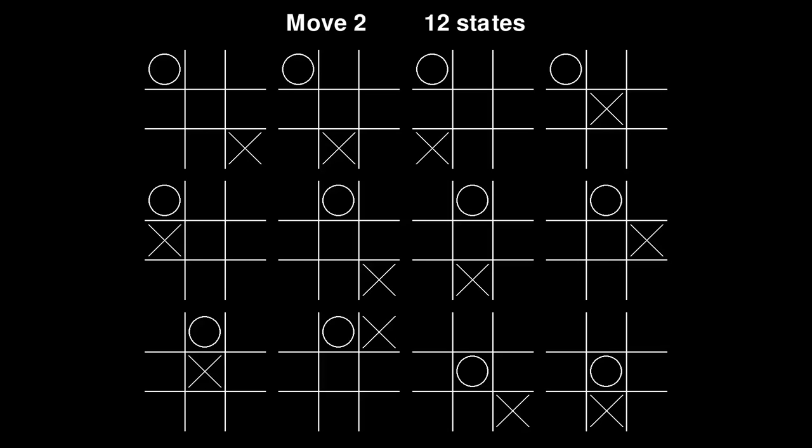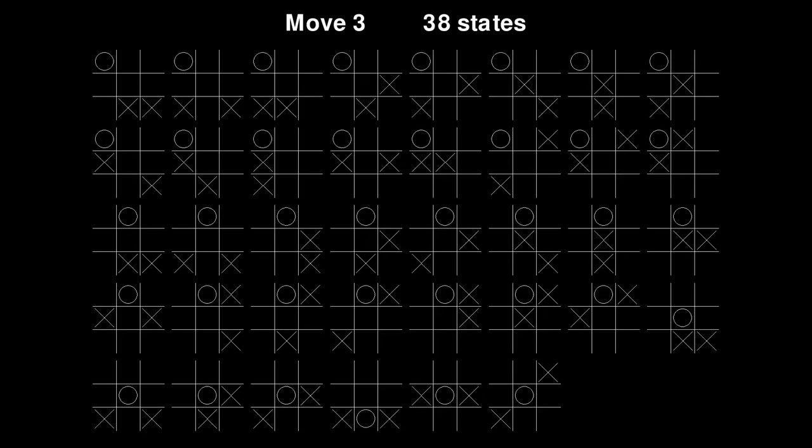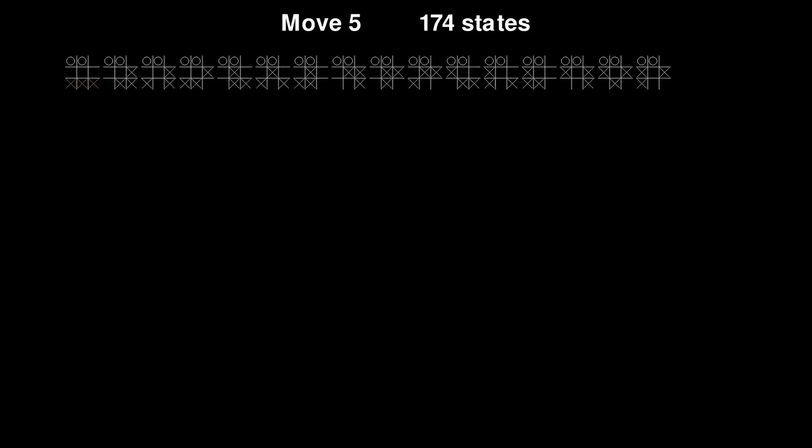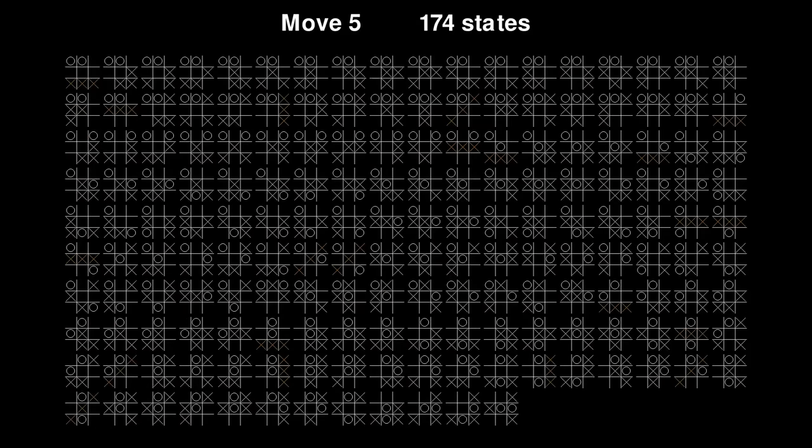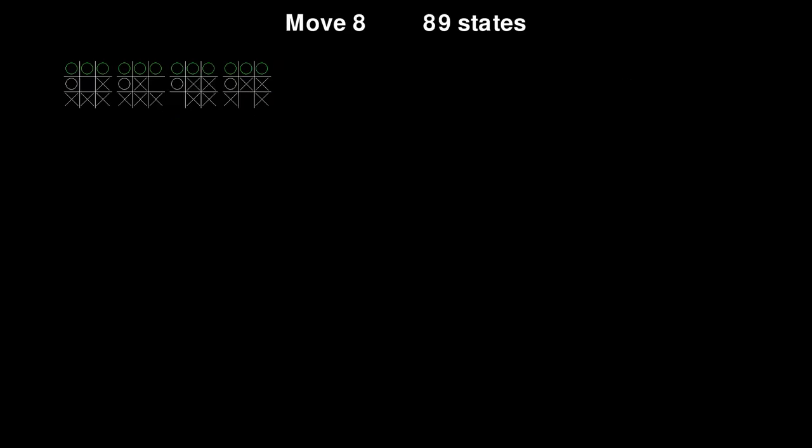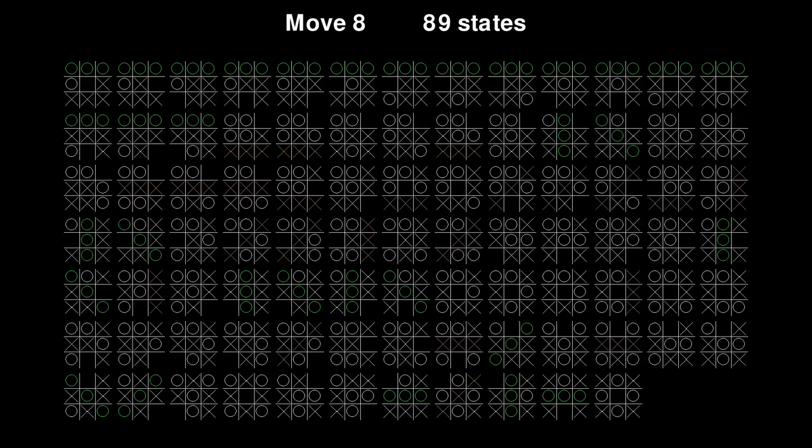After O plays the second move, there are now 12 possible states of the board. And then on X's next move, there are 38 possible states of the board. Remember, at each stage I'm lumping together symmetric versions of the same board state. And interestingly, although the number of states of the board goes up a lot at first, it reduces towards the end as the board fills up.